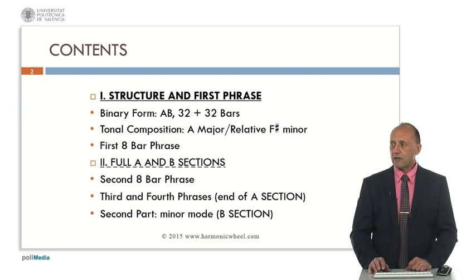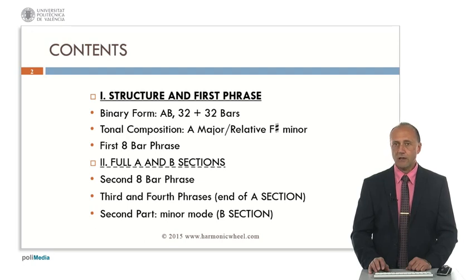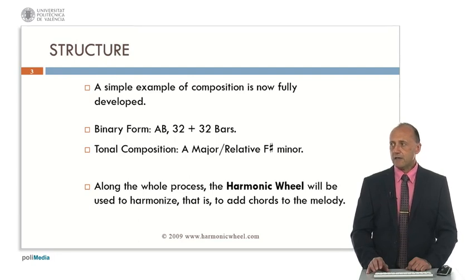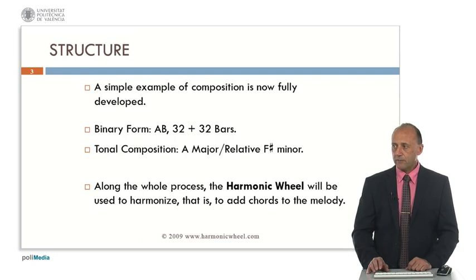We will compose a first phrase with eight bars. In the second part of this presentation, we will complete the A section and then we will compose the B section. As I explained, this is a simple example of composition. Along the whole process, the harmonic wheel will be used to harmonize, that is, to add chords to the melody.